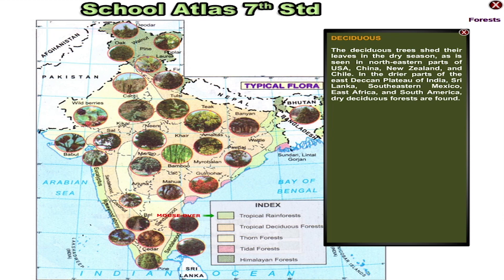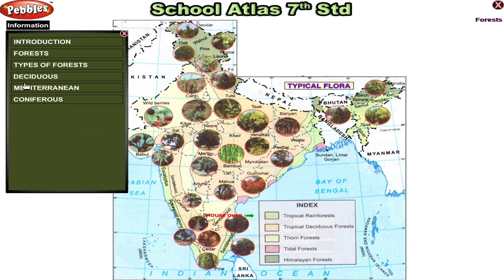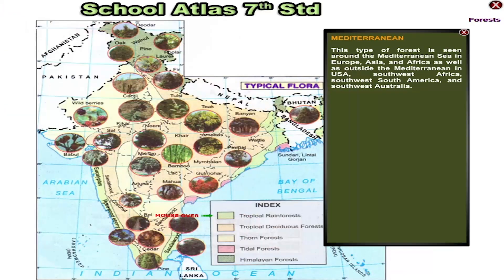Deciduous. This type of forest is seen around the Mediterranean Sea in Europe, Asia and Africa, as well as outside the Mediterranean in USA, Southwest Africa, Southwest South America and Southwest Australia.